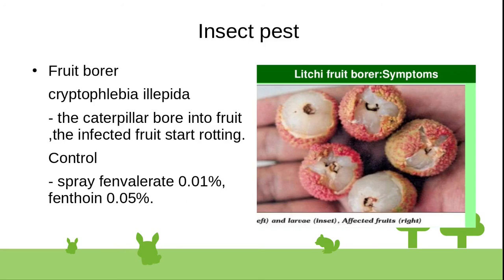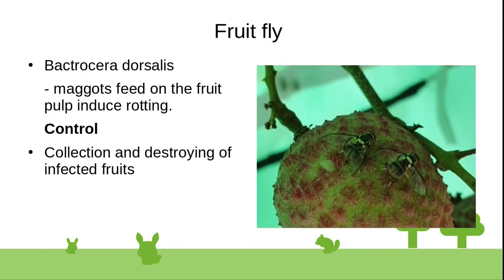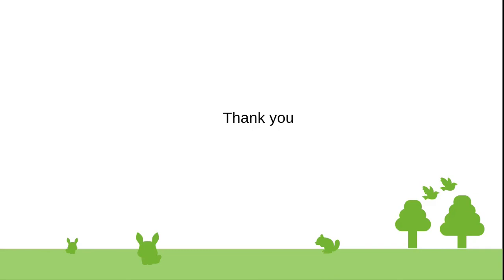Insect pests: caterpillar — the caterpillar bores into infected fruit, causing rotting. Control: spray fenvalerate 0.01% or fenpropathrin 0.05%. Fruit fly — caused by Bactrocera dorsalis; maggots feed on fruit pulp causing rotting. Control: collection and destruction of infected fruit.